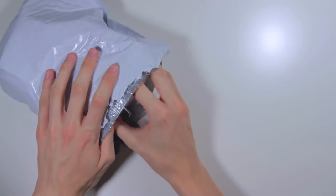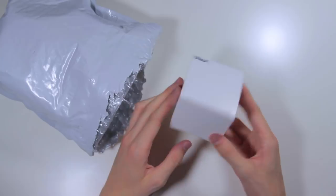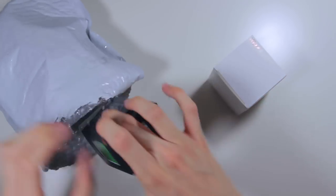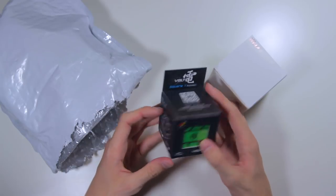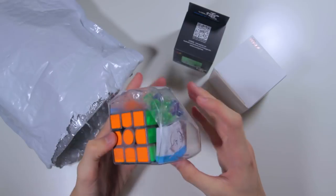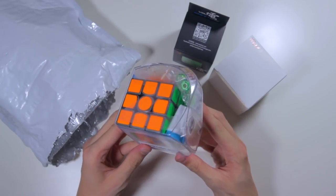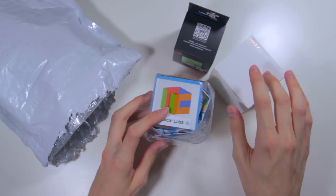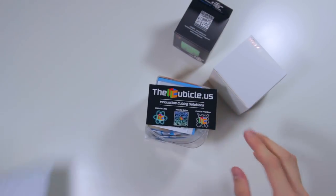Alright, let's take a look inside. Okay, so this should be, I believe, a 4x4. And oh, this is the new X-Man - I believe the X-Man Volt Square One. And here, this is interesting. This looks like it's the boron-treated Gans Air UM, and these are from Cubicle Labs. It's just a normal cube, and finally the business card.